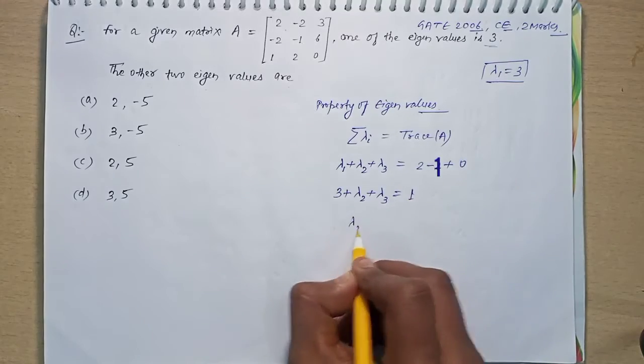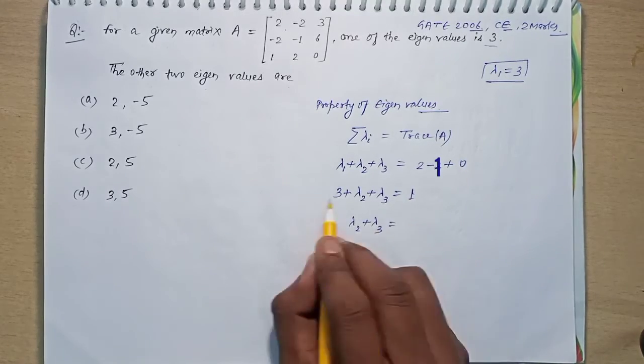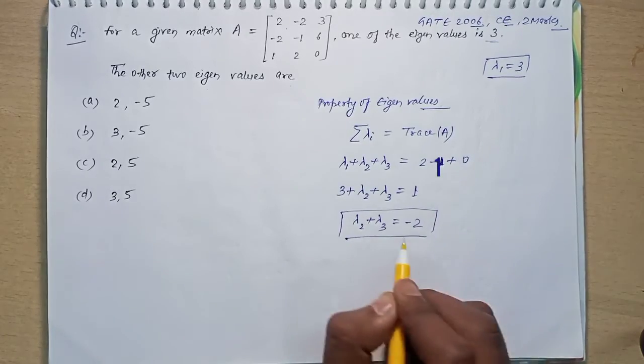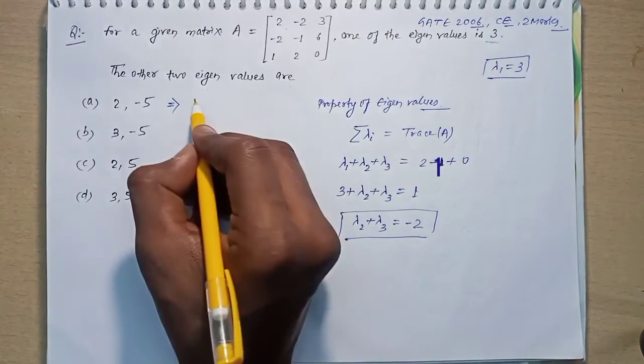So lambda two plus lambda three is equal to minus two. That is, the sum of the other two eigenvalues will be minus two. Now check the options here.